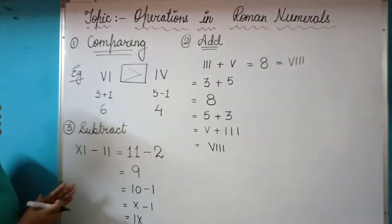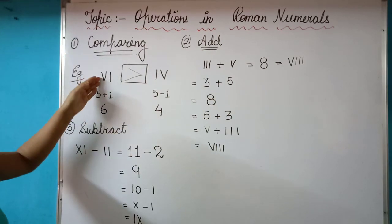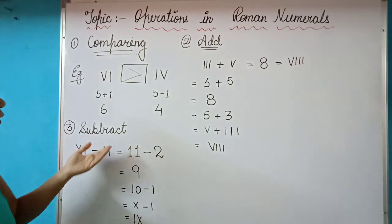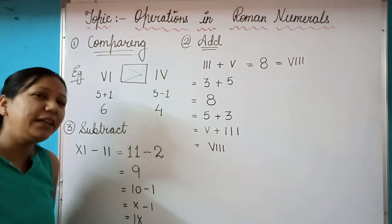I hope using these three rules and these three methods, we can easily compare the Roman numerals. We can also add the numerals and we can also subtract the Roman numerals. I hope the topic is very clear to all of you. Thank you.